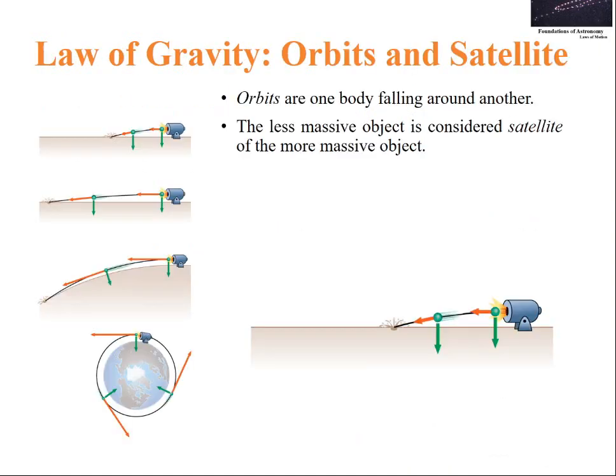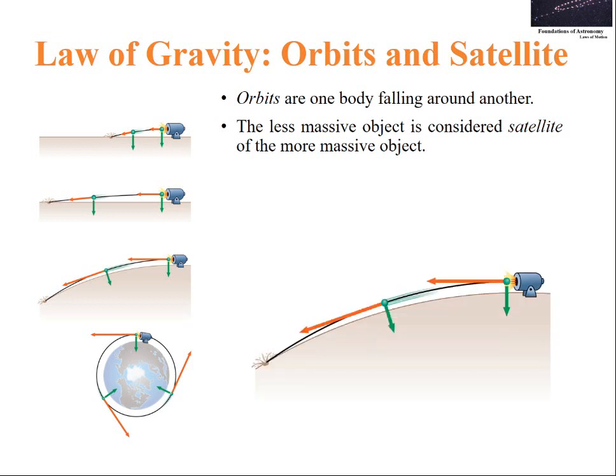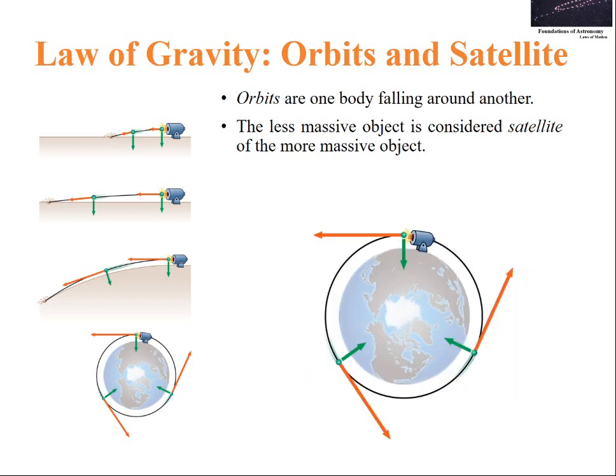Now let us discuss orbits and satellites. Orbits are one body falling around another. The less massive object is considered satellite of the more massive object. You can see the figures where we are trying to fire a cannonball. If you apply more fire power, the cannonball covers more distance. The projectile increases the distance if we apply more fire power. Once we reach a fire power which helps the body to make a complete revolution around earth, such a situation is called orbit.